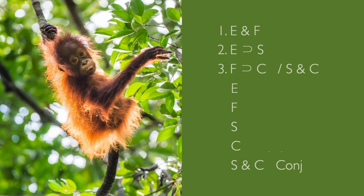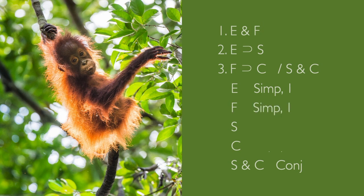But now we have to ask, where would that e come from? There it is, up here in line 1. We can break that off using the rule of simplification. We got this e using simplification on line 1. And the same goes for this f — we broke it off from line 1 using simplification. Since these lines are all filled out, we can number them now.